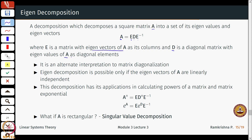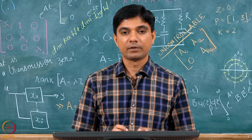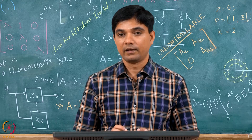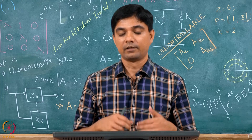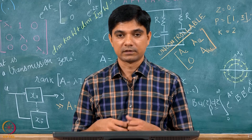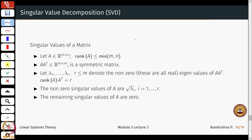This representation is useful for computing higher powers of A: A to the power n is simply E D to the power n E inverse. The interesting question is what happens when A is a rectangular matrix, and the answer to that is given by the concept of singular value decomposition.